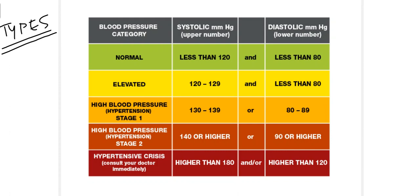Stage 1 hypertension is when the systolic blood pressure ranges from 130 to 139 and diastolic from 80 to 89. As hypertension is not controlled it reaches Stage 2, where systolic is 140 or higher and diastolic is 90 or higher. The dangerous situation is hypertensive crisis, where you must consult your doctor immediately — the diagnostic criteria is systolic greater than 180 and diastolic greater than 120.